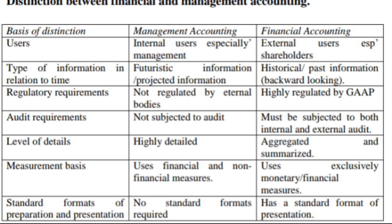Another basis of distinction is the type of information in relation to time. Management accounting information is futuristic or projected information — something like an estimation for the future. Financial accounting information is historical or past information, based on activities that already occurred.